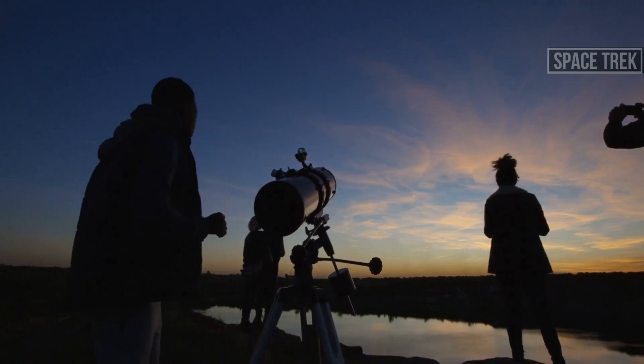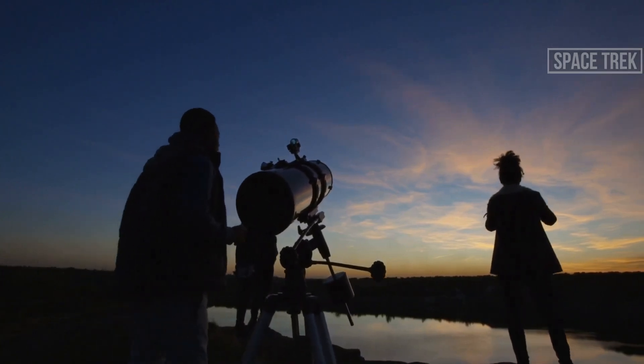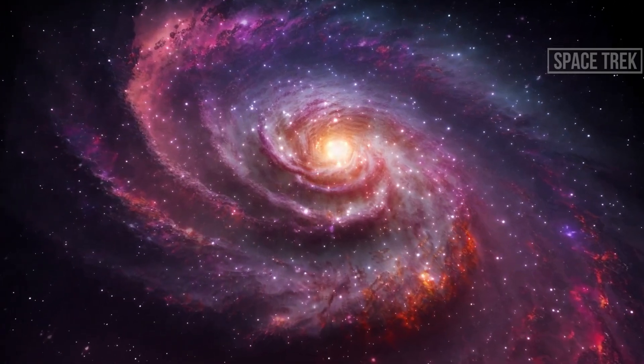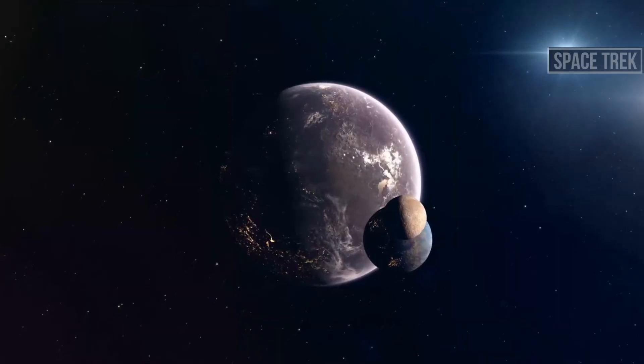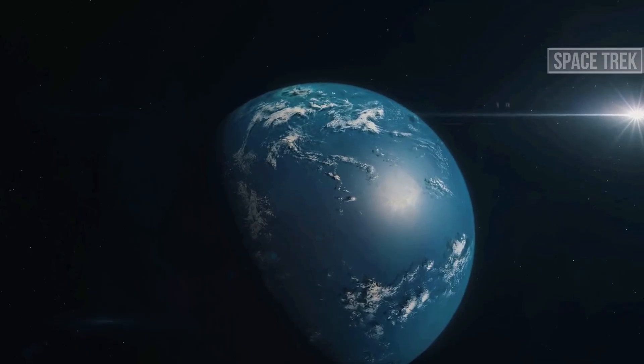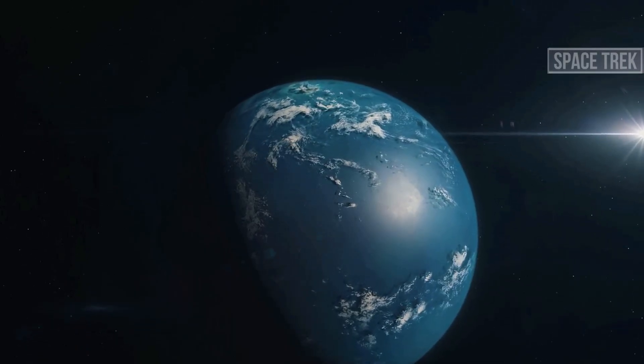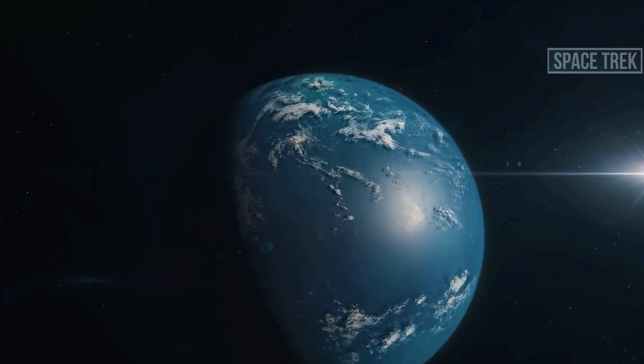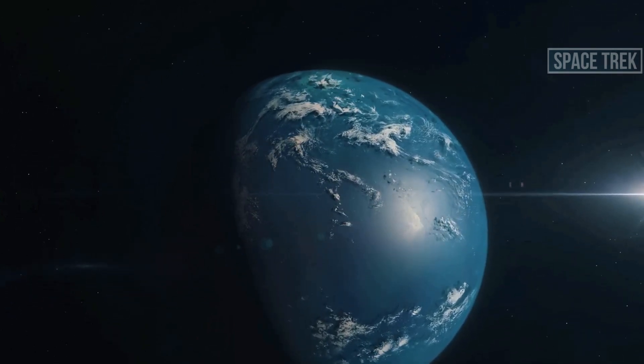The Kepler Space Telescope, launched in 2009, has been instrumental in this pursuit. It has discovered over 2,000 exoplanets, many of them within what we call the habitable zone. This is the Goldilocks region around a star where conditions are just right. Not too hot, not too cold for liquid water to exist. But our exploration didn't stop with Kepler.